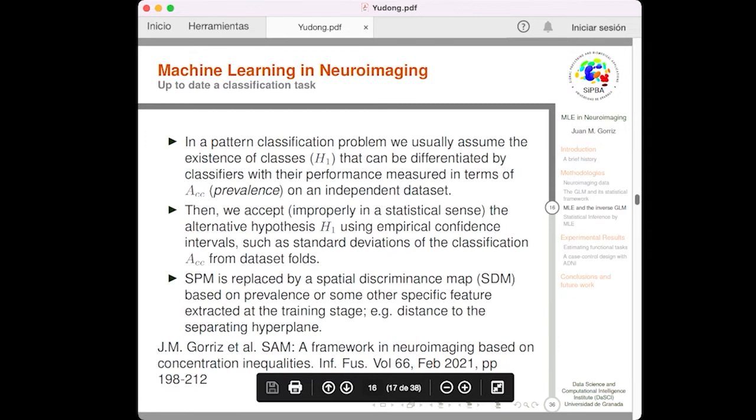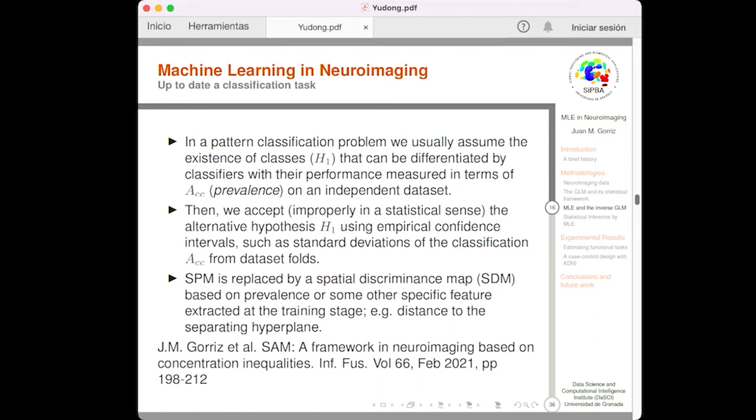Okay, let's move on. To sum up, in a pattern classification problem, we usually assume the system of classes, this is the alternative hypothesis, that can be differentiated by classifiers with the performance measure in terms of accuracy, the concept of prevalence. Then, we accept properly, in a statistical sense, the alternative hypothesis using empirical confidence intervals. So, in a classification, if we have two groups and we obtain a high accuracy, we say that the groups are really different. So, up to date, we apply machine learning in neuroimaging and we replace the SPM maps by some kind of spatial discriminant maps based on prevalence or some other specific feature extracted at the training stage, for example, the distance to the separating hyperplane.